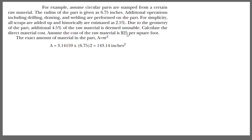The raw material cost is $25 per square foot and the radius of the part is again 6.75 inches. Now since it is a circular product the area is given as A = πr². You substitute the values of radius in there and you will get the final product area.